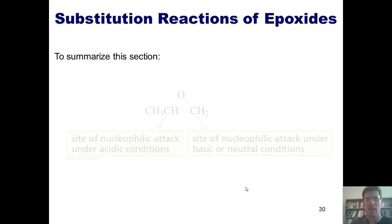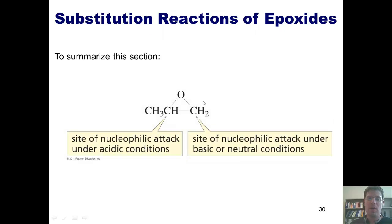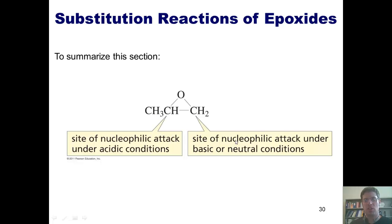So let's summarize this section. If I've got an asymmetric epoxide and treat it under acidic conditions, the nucleophile will attack the more substituted carbon, because that has the more stable partial positive charge. Under basic conditions, the nucleophile attacks the less substituted carbon because it's less congested and easier to get in there.